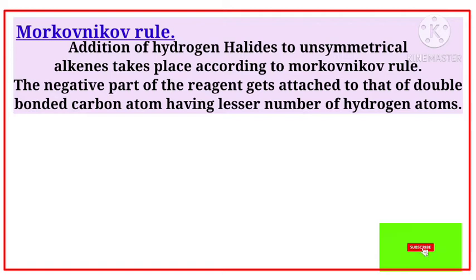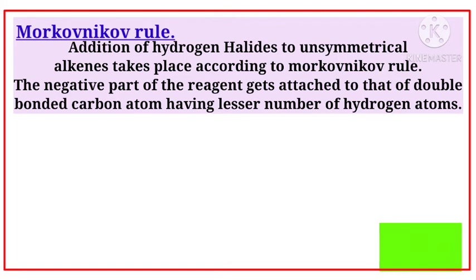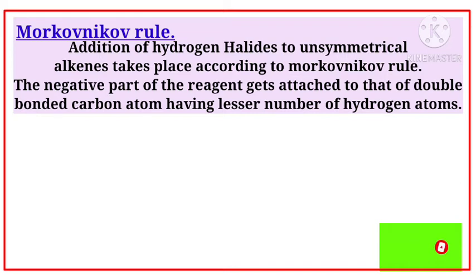The addition of hydrogen halides to unsymmetrical alkenes — alkenes are double-bonded carbon atoms — takes place according to Markovnikov rule. The negative part of the reagent gets attached to that double-bonded carbon atom having the lesser number of hydrogen atoms.